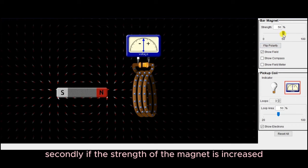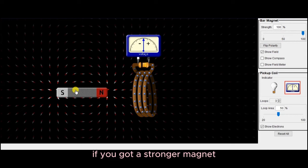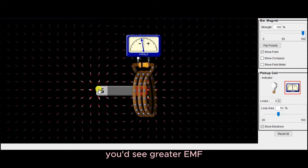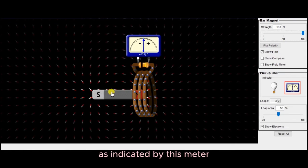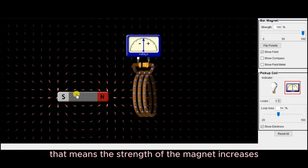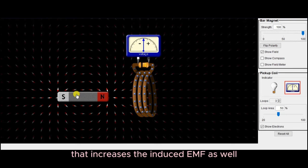Secondly, if the strength of the magnet is increased, if you've got a stronger magnet, and that is moved towards the same coil of wire, you'd see greater EMF as indicated by this meter. That means the strength of the magnet increases, that increases the induced EMF as well.